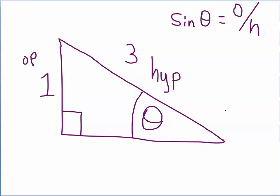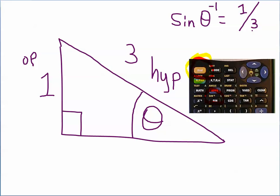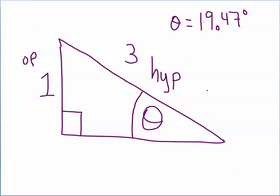I just remember the word SOHO — it's a place in London and New York — and so the first three letters tell me the sine is the opposite divided by the hypotenuse. You're going to need to use the second key on your calculator, shown here as a TI-83, and that allows you to pick the inverse sine function. You're working this backwards — you don't know what the degree is, but you do know that its sine is equal to one-third. So if you crunch the numbers, you come out with 19.47 degrees, correct to two decimal places.